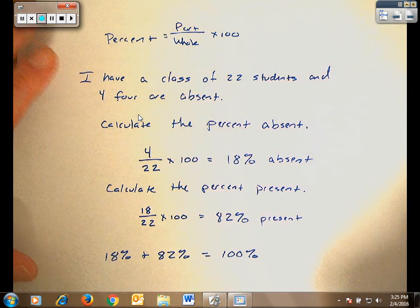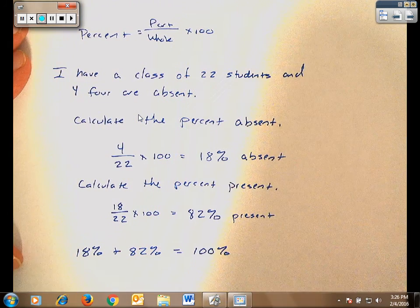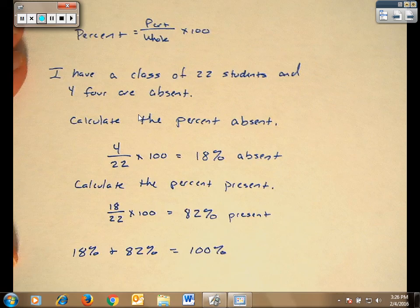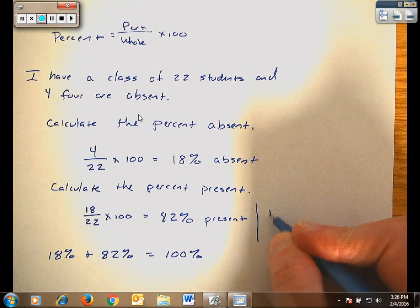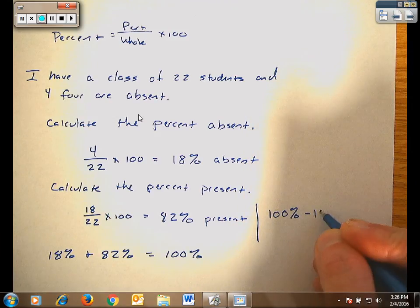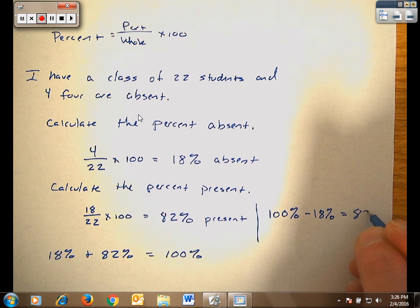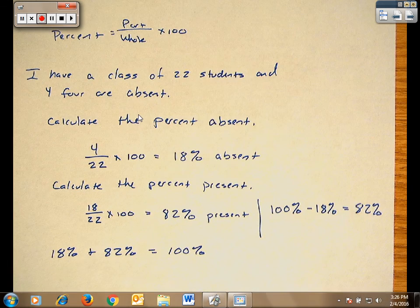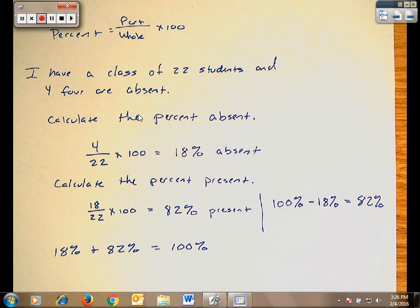Technically speaking, because I am using the same class, I could have found this answer by using the 18% that I'd already calculated. I could have alternatively done this as 100% of the class minus the 18% that we're missing and found my 82% present that way. Either technique would work if you're calculating both.